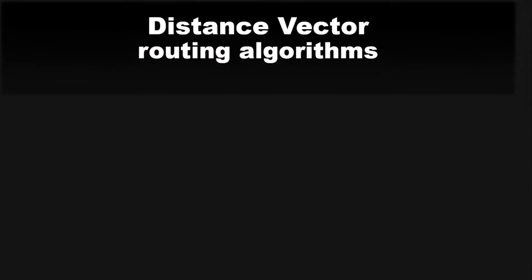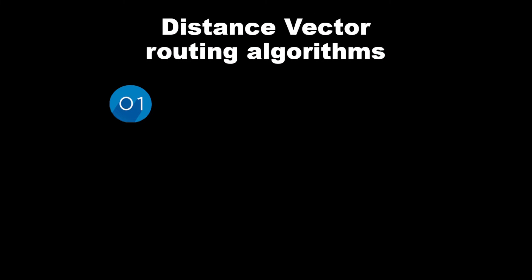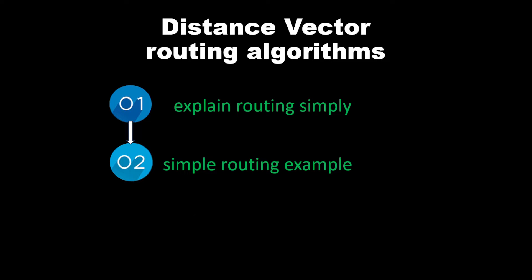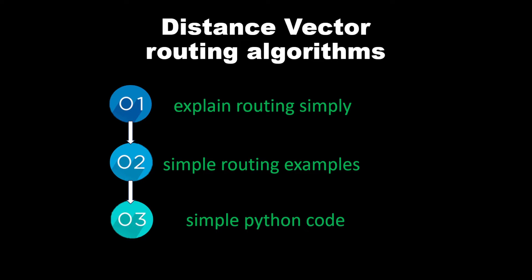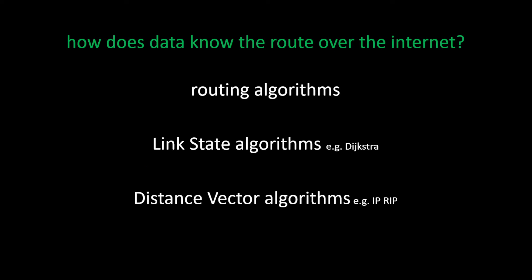In this video there will be three parts: first we simplify how we use routing, second we give simple routing examples, and then we provide the code in Python. Routing algorithms are normally split into two types: link state algorithms, which we've seen with Dijkstra's algorithm, and distance vector algorithms, which we'll see in this video.